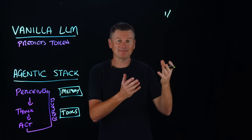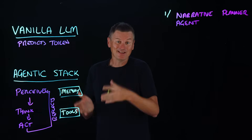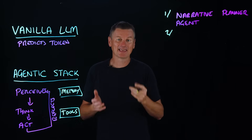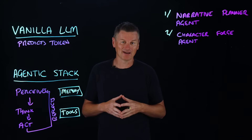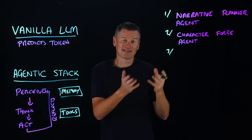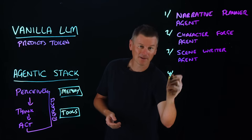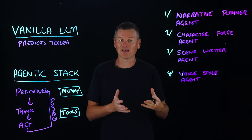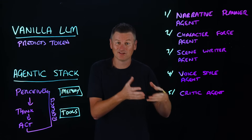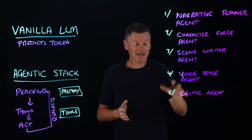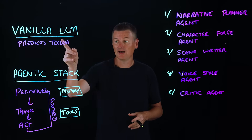The first agent might be the narrative planner agent — that turns a prompt like 'write me a space opera noir' into a beat sheet with scene structure and thematic goals. The second might be a character forge agent that generates bios, backstories, and motivation graphs, storing them in a vector database for recall so they don't get lost in the context window. The third might be a scene writer agent that turns each beat into prose using the character forge agent to ensure continuity. The fourth might be a voice style agent that applies a consistent target writing style. And number five is the critic agent, which scores the tone, pacing, and plot coherence of all the generated content and generates change requests — forming the self-reflection loop that is missing from pure LLM runs.